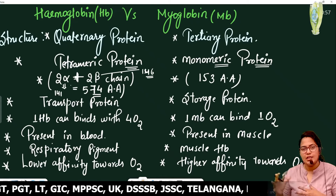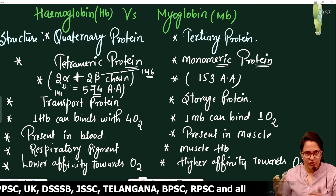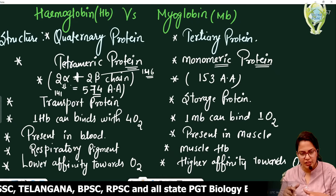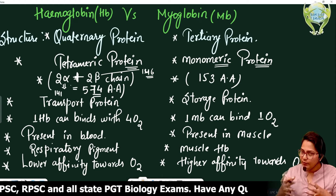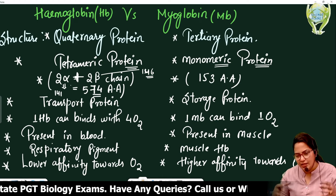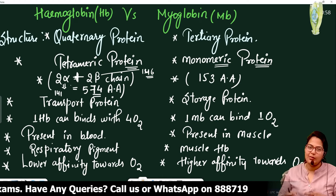Hemoglobin is a transport protein used by our blood. Myoglobin, on the other hand, is a storage protein — it is stored in our muscles.